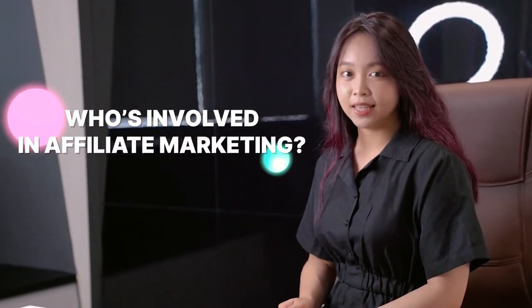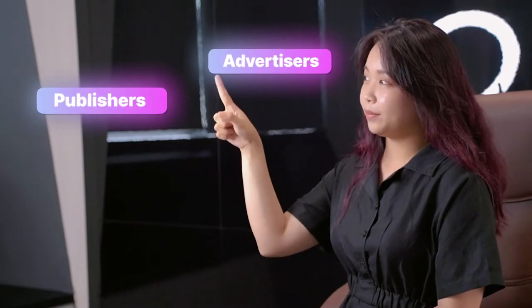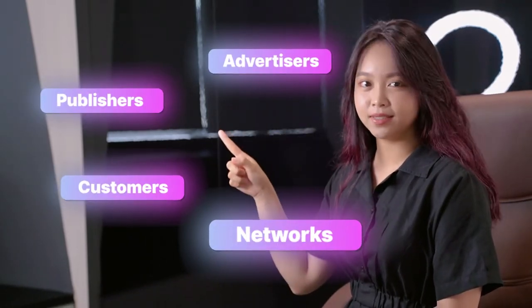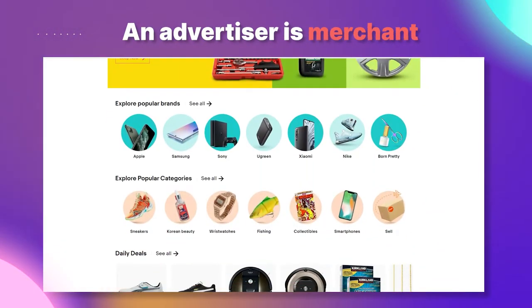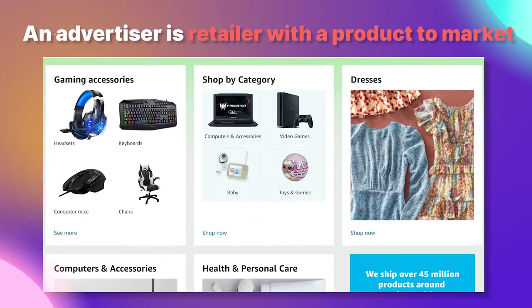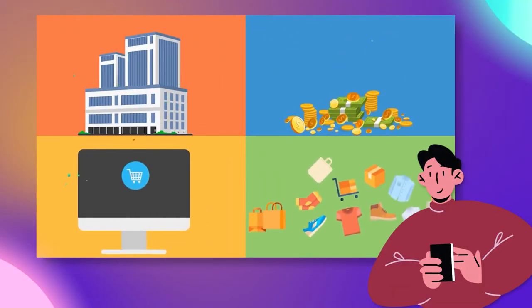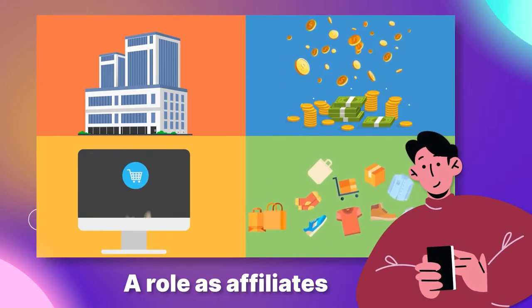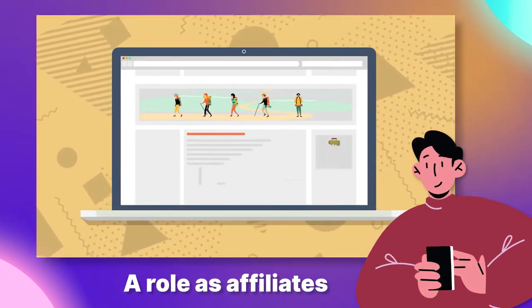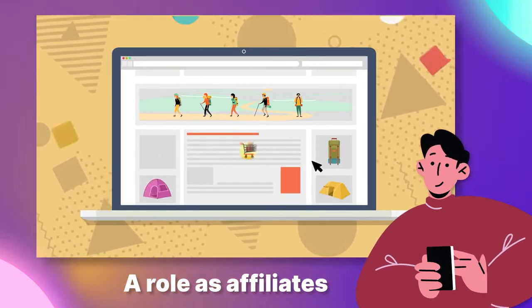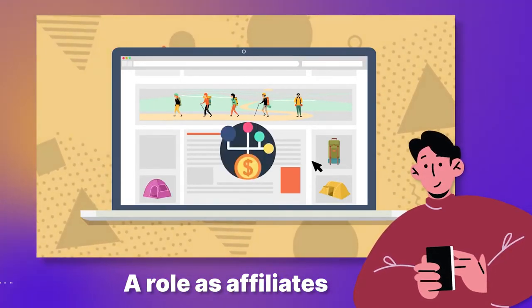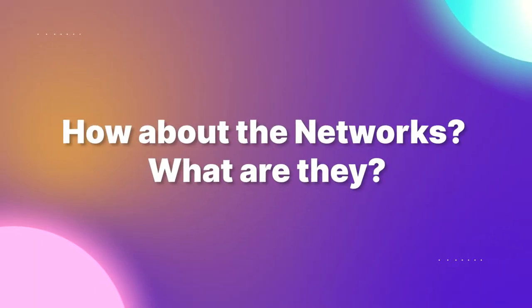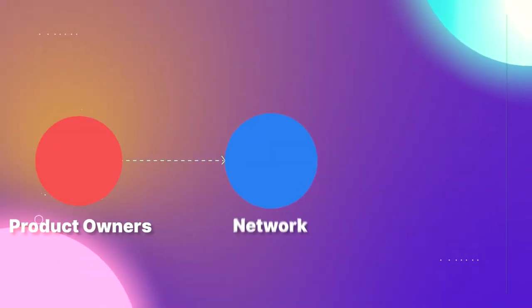Then you would wonder who's involved in affiliate marketing. Typically in an affiliate campaign there are four indispensable factors: advertisers, publishers, networks, and customers. An advertiser is a vendor, merchant, or retailer with a product to market. Meanwhile, publishers play a role as affiliates who market the advertiser's products in an appealing way to potential customers and get a commission.